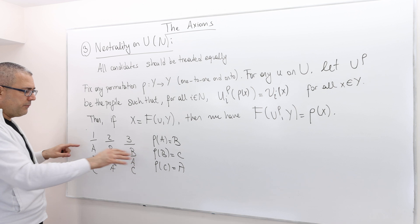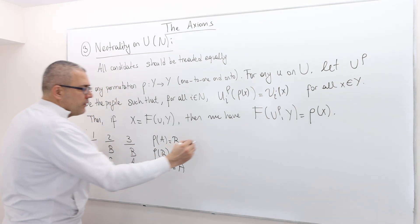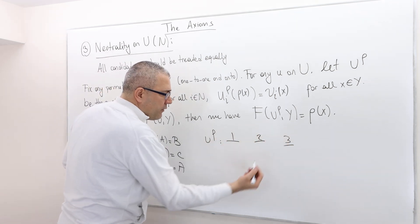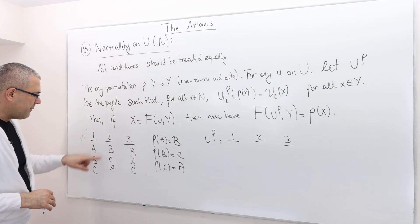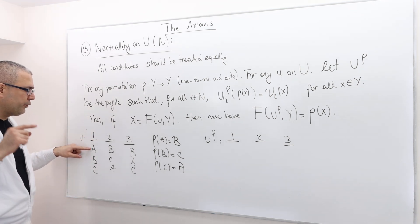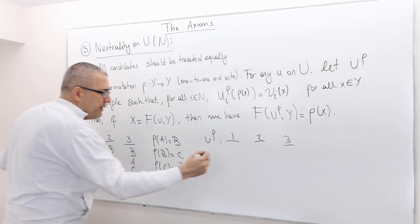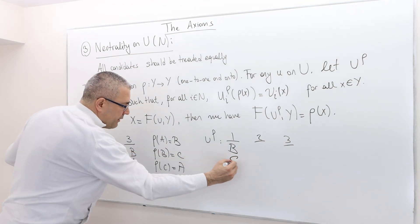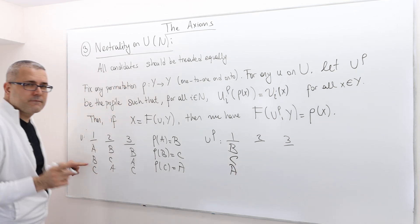So, here, once I permute this, what does that mean? This is, remember, U. So, now, what is U rho? Well, agents 1, 2, and 3, the names of the voters this time stay the same. Remember, agent 1 used to prefer A to B. But now, A became B. So, therefore, that means B is preferred to C, because B is now C, and then C is A.